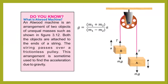This arrangement of two objects of unequal masses attached to the ends of a string over a frictionless pulley is called an Atwood machine. This arrangement is sometimes used to find the acceleration due to gravity, using the formula: G equals (M1 plus M2) over (M1 minus M2) into A. This is an important short question — note it down.